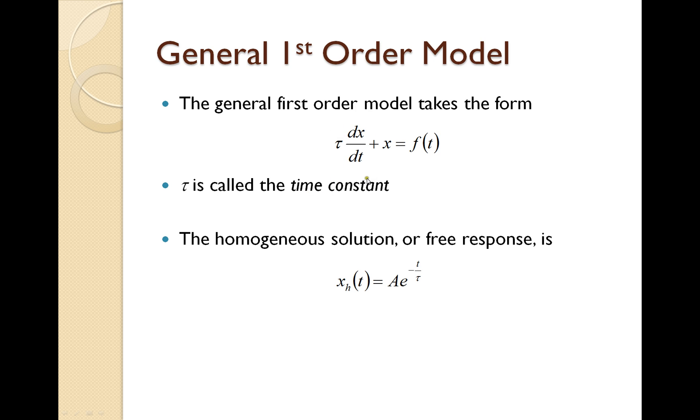All right, and then from that, if we can get it into that form, if we do our lambda substitution or look for our eigenvalues of the characteristic equation, we find that the homogeneous solution for this general first-order model is some unknown constant times e raised to the negative t over that time constant, tau.